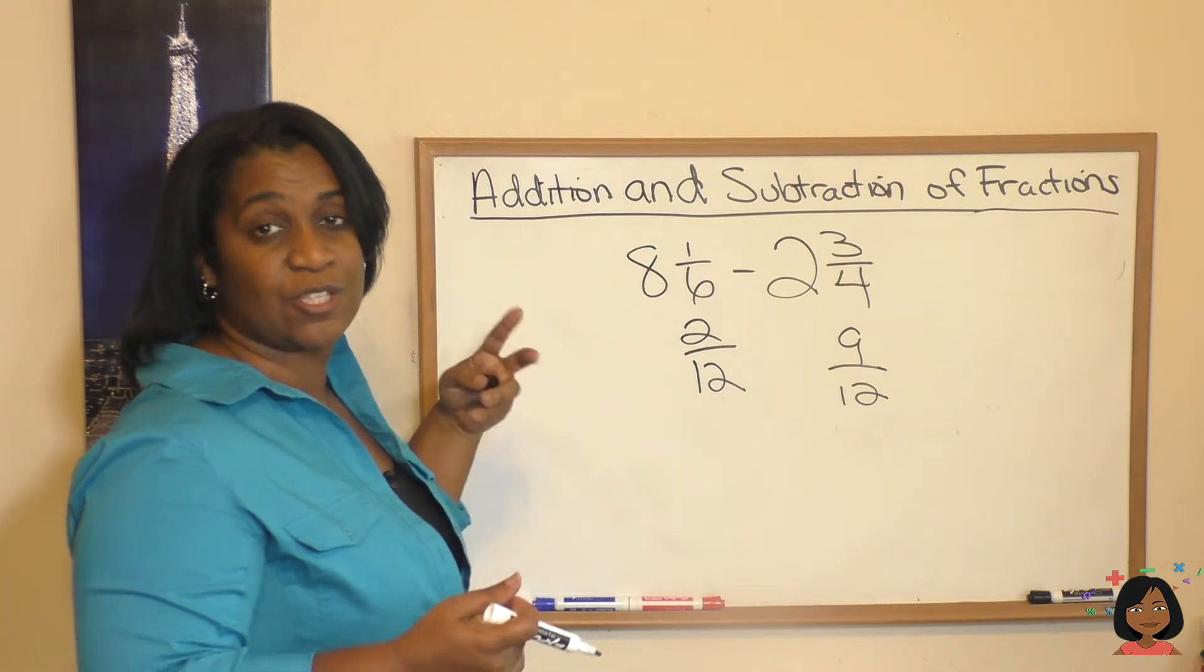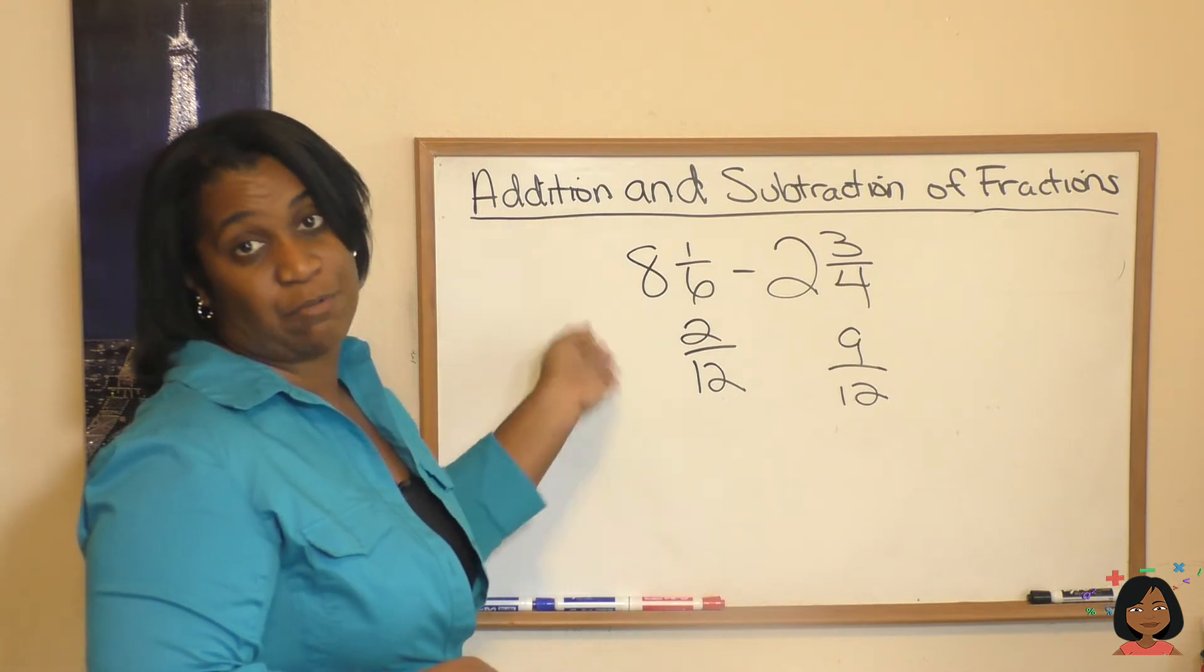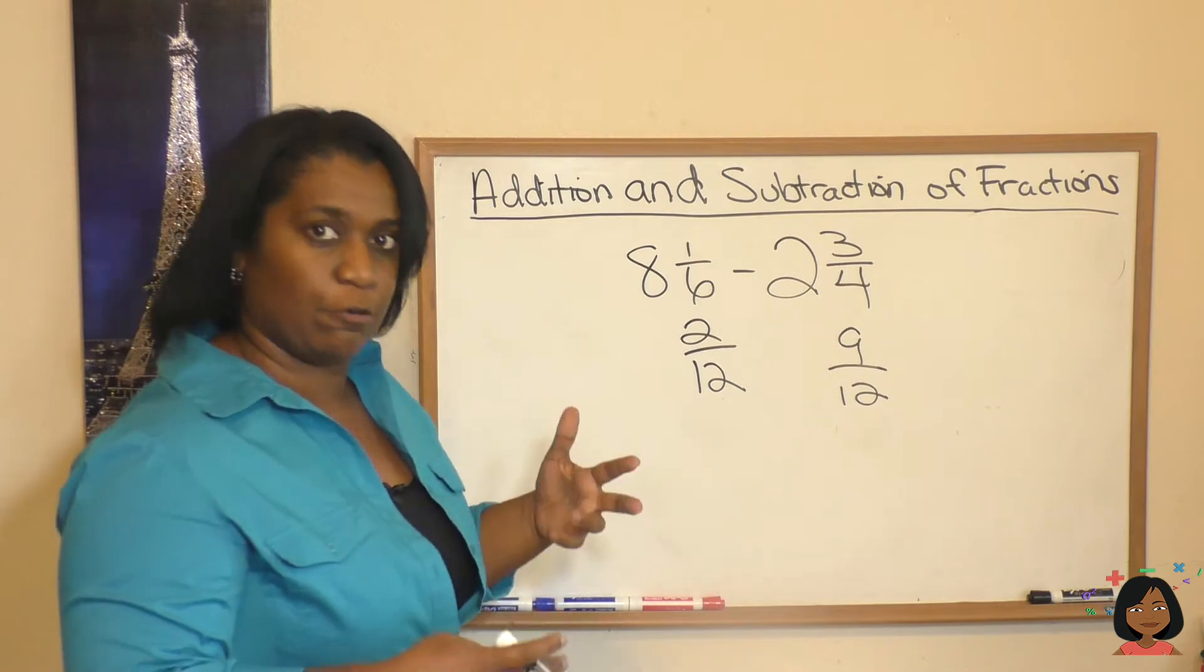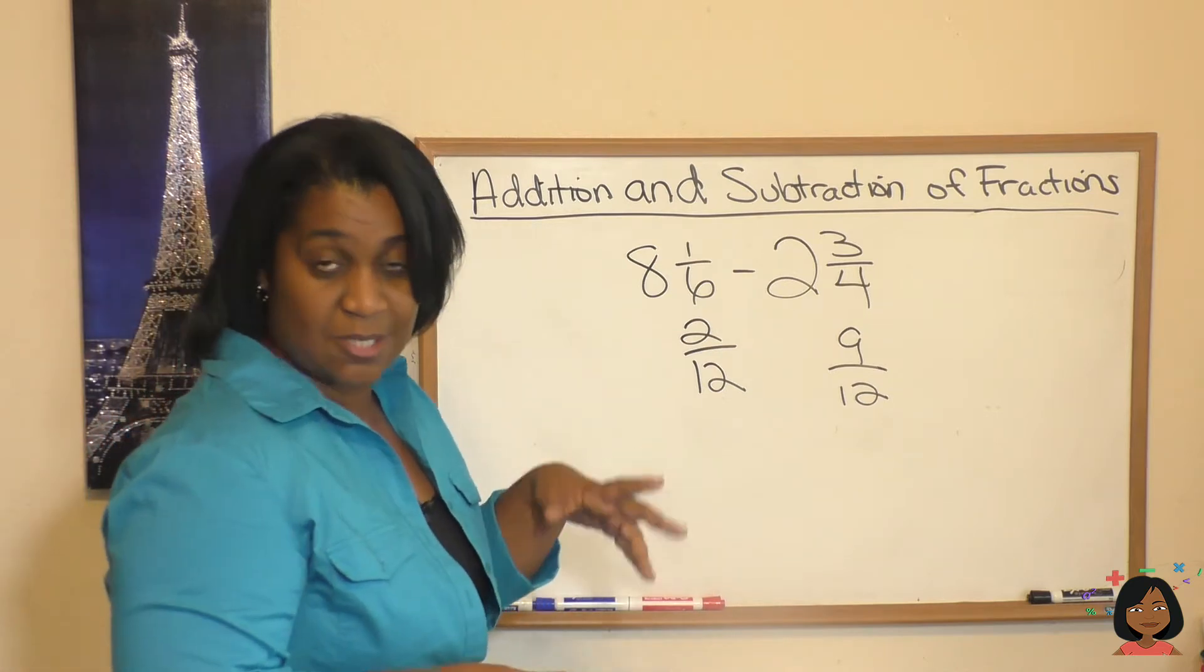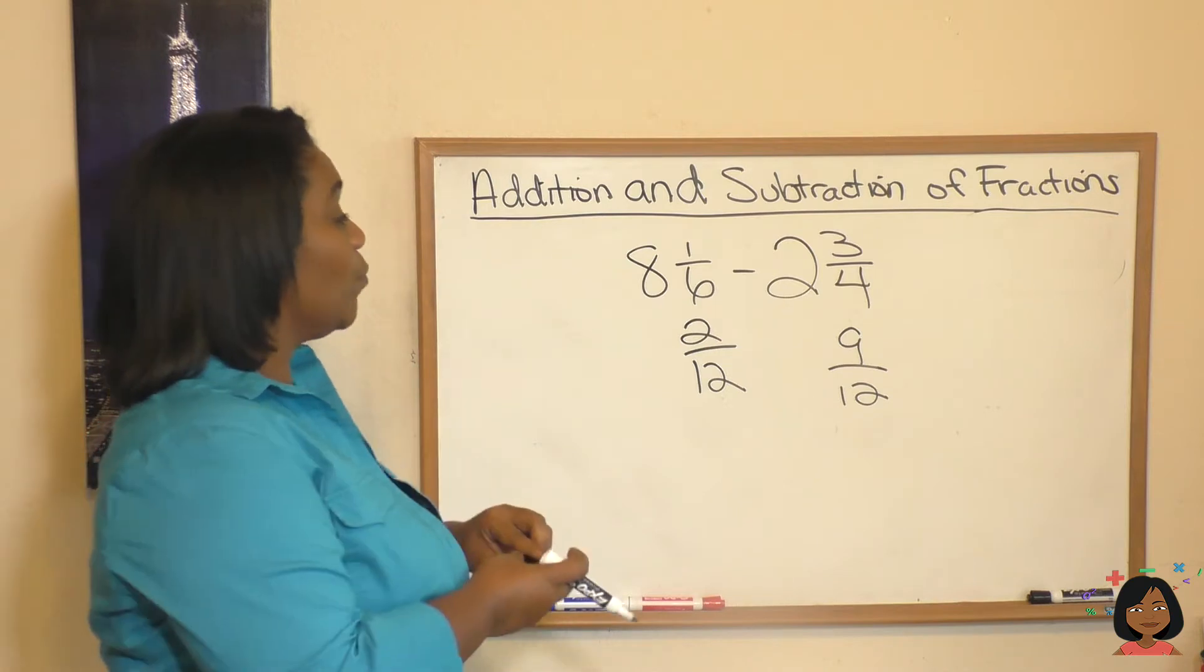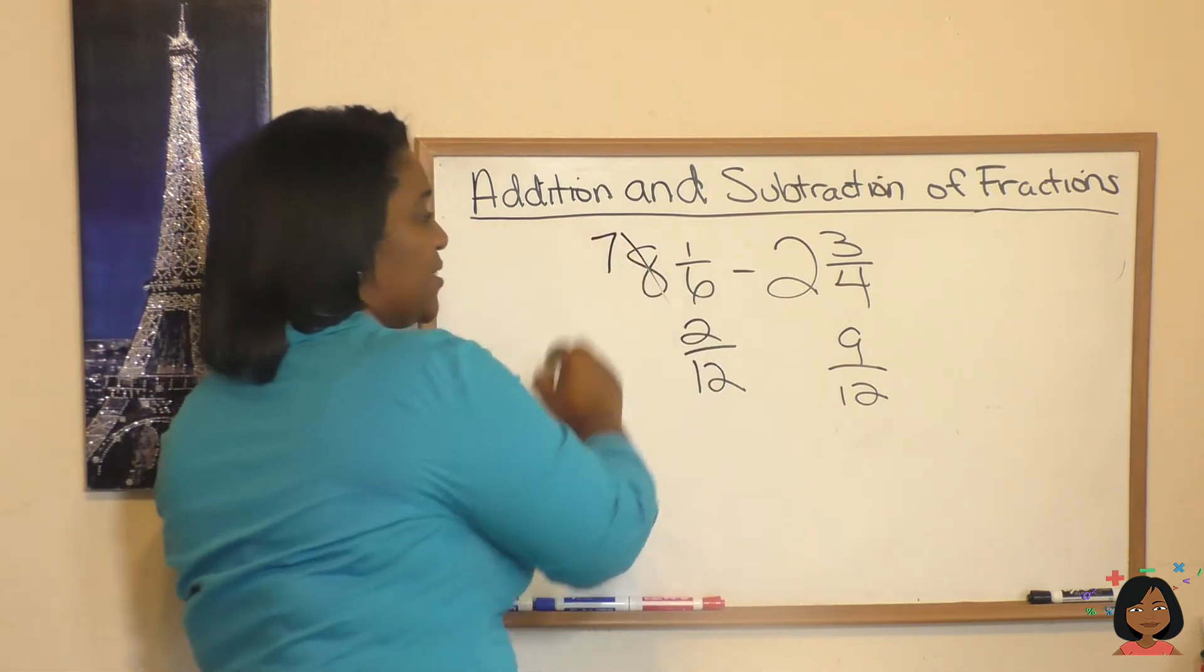So we need a little help from the whole numbers. What we're going to have to do is from this 8, we're going to, depends on what school of thought you come from. Some people say we're going to borrow 1 and bring it over, the equivalent of 1. Some people say we're going to regroup it. That's the new way we say it. It doesn't really matter to me as long as you know what to do. So what we're going to do, cross out this 8, make it a 7.